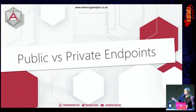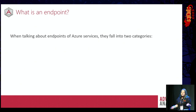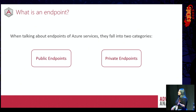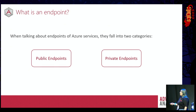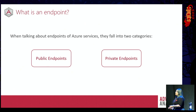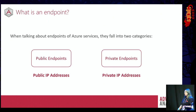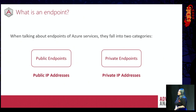So, public versus private endpoints — you've probably heard those words being thrown around. Specifically, when we're thinking about Azure resources, you can have public endpoints or private endpoints of those Azure resources. The difference between these two is that public endpoints are represented by public IP addresses, and private endpoints are represented by private IP addresses. That is the main difference at the end of the day, and obviously that has different impacts which we'll talk through in a bit more detail.